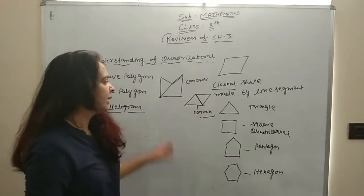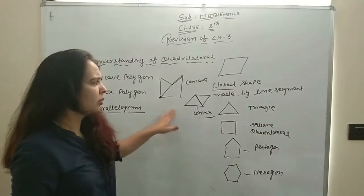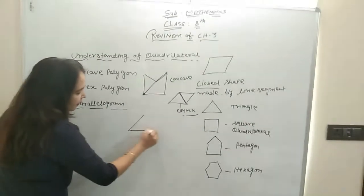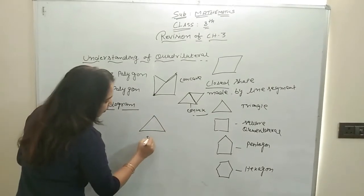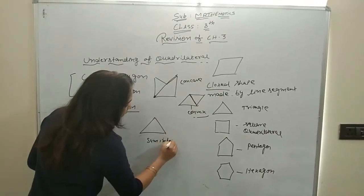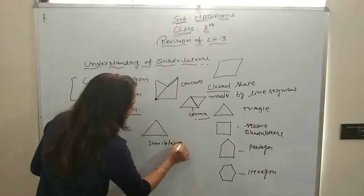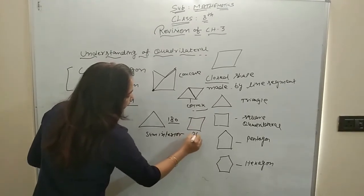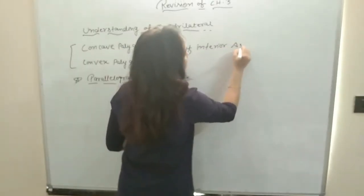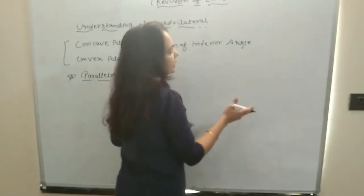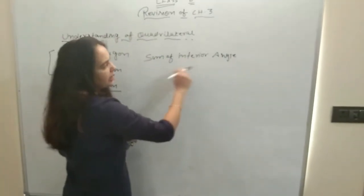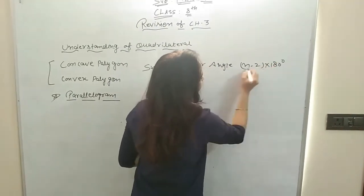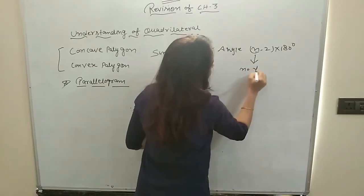How to find the interior angle and exterior angle — this is a very easy concept, you can do it easily. The sum of the interior angles of a triangle is 180°. And if we take a quadrilateral, the sum of the interior angles is 360°. How to find it if pentagon, hexagon, or octagon is given? The sum of interior angles is (n minus 2) into 180 degrees, where n is the number of sides.